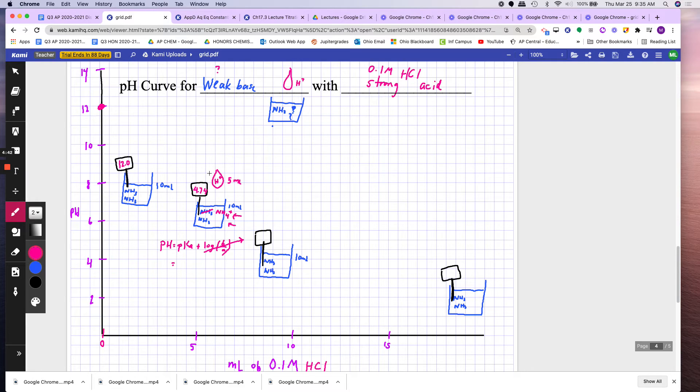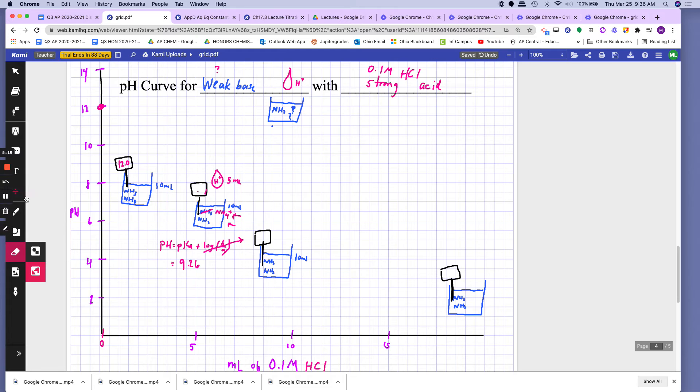So when I try to plot 4.74, it doesn't make sense. It should be higher than 7, right? So this is not pH, this is not pKa, this is pKb. Oh my goodness. So that's pKb, so I have to subtract that from 14. So it's 14 minus 4.74. pKa is 9.26, which makes more sense. I want pKa, so it should be 9.26, which makes better sense, because it was at 12, and then it goes down a little bit to 9, around here, something like that.